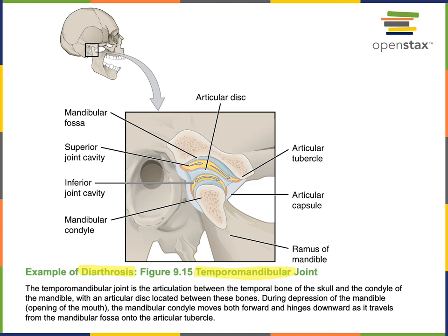Other examples of diarthrosis include the glenohumeral joint, commonly known as the shoulder joint, and the humeral-ulnar joint, commonly referred to as the elbow joint. All diarthroses share the same structural category — structurally, all diarthroses are considered synovial joints.